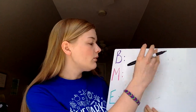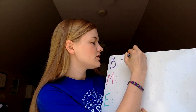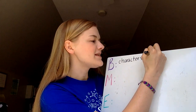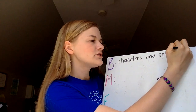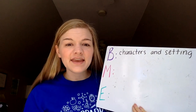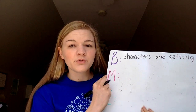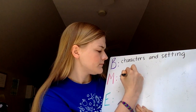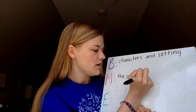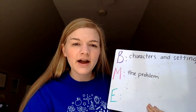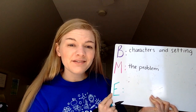When we're looking at a story and reading, we want to be thinking about the different parts of the story. At the beginning of the story, we want to be looking for the characters and the setting. Remember, the characters are who the story is about, and the setting is where it takes place. In the middle of the story, we want to be looking for the problem — most stories have a problem the characters are trying to solve. At the end of the story, we're normally going to find the solution.